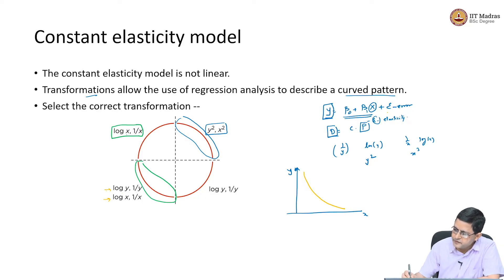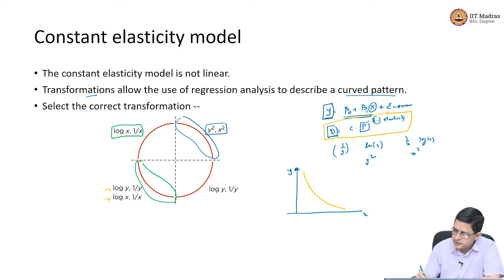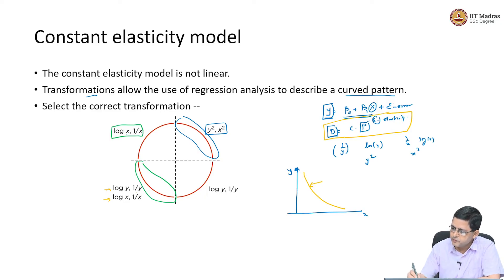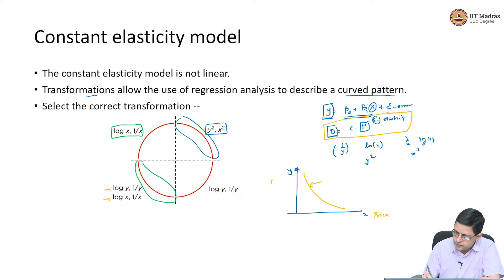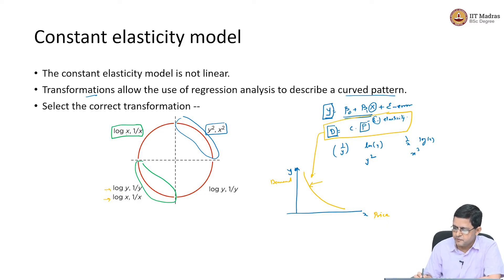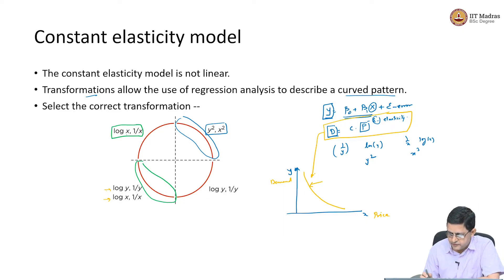When we say our relationship is of this type — c into p to the power of negative epsilon — if we put price on the x-axis and demand on the y-axis, this equation is going to produce a curved, non-linear pattern. So let us try a log-log transformation.